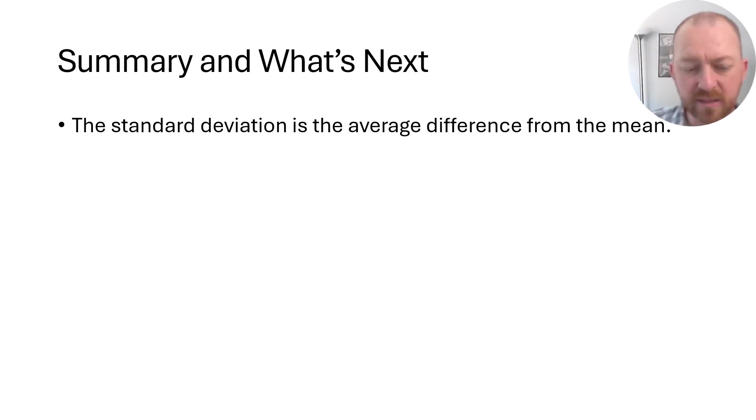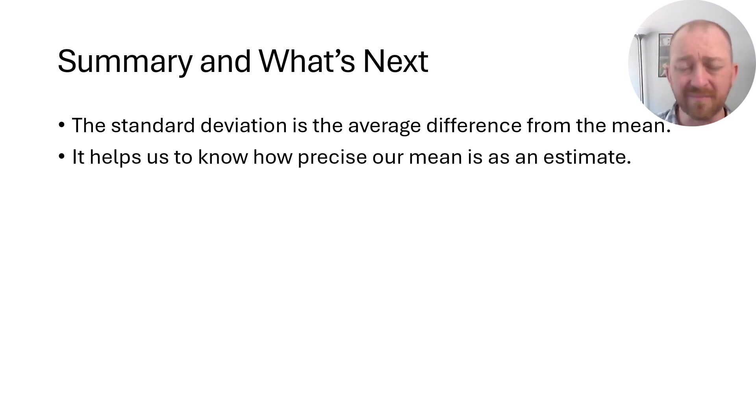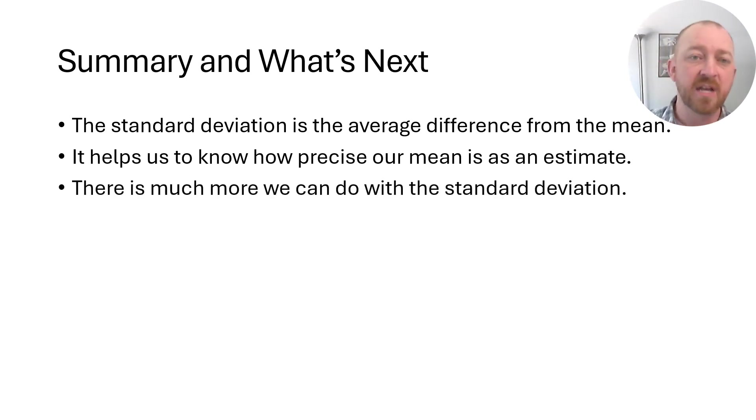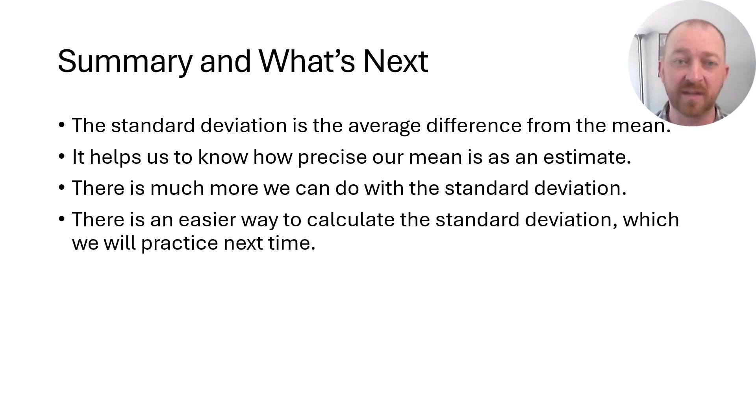So really quickly, the standard deviation once again tells us the average difference of a data set from its mean. And it also helps us to know just how precise our mean is as an estimate. In other words, if you have a relatively small standard deviation, that means your mean is a very good guess. It's very likely an accurate guess or its accuracy increases as you have a smaller standard deviation. As the standard deviation gets bigger, that means your mean is a less precise estimate. So that's very helpful. So there's a lot more stuff that we can do with the standard deviation. As I said, we'll talk about that as we get into Z scores and all sorts of other things. But this was a nice little practice. And as I said, the next lecture will be a rather simpler way to calculate a standard deviation using a slightly different equation. So we'll cover that in due course. And I'll see you then.